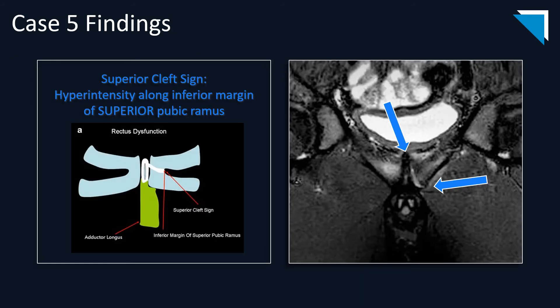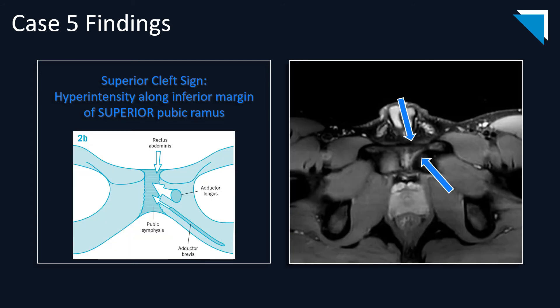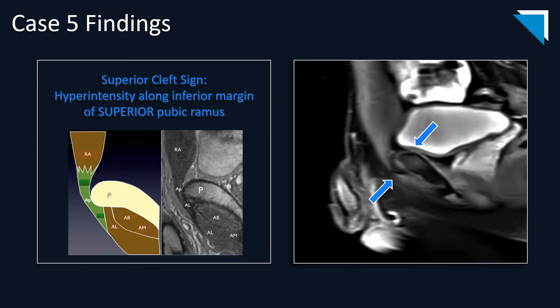Case five is a football player presenting with persistent, somewhat debilitating groin pain. On this small field-of-view coronal STIR image, you see a superior cleft sign, which is a hyperintense signal along the inferior margin of the superior pubic ramus. This is also demonstrated on an axial small field-of-view STIR image and confirmed on a sagittal image showing a hyperintense curvilinear signal along the inferior margin of the superior pubic ramus.